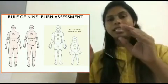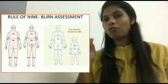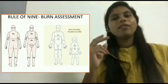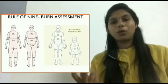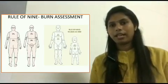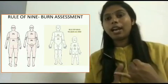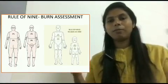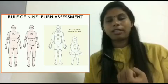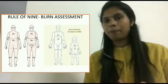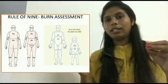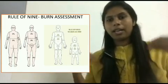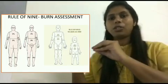There are also other methods for calculating total body surface area. One is the Lund and Browder method, which is not commonly used but is more exact. In that method, the entire body is divided into smaller anatomical parts, and each part carries a particular percentage of the total body surface area, which is used to calculate the burn percentage.